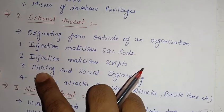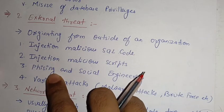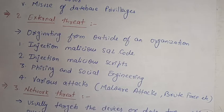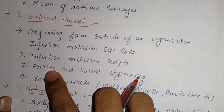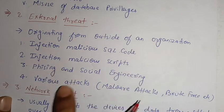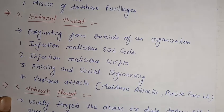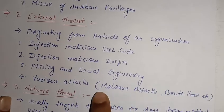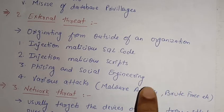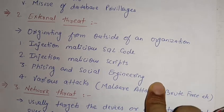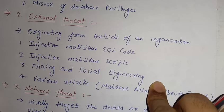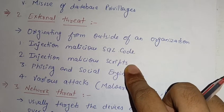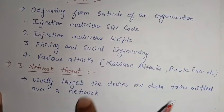Clicking a link that is not coming from a proper source falls under phishing. Additionally, there are various attacks like malware attacks and brute force attacks — these are also done by external or outsider persons to steal the data of an organization, and are considered external threats.